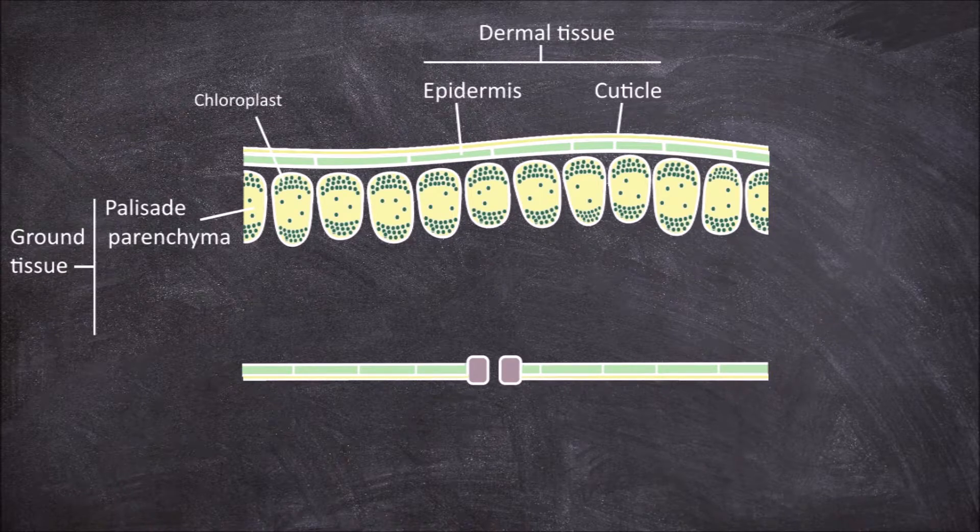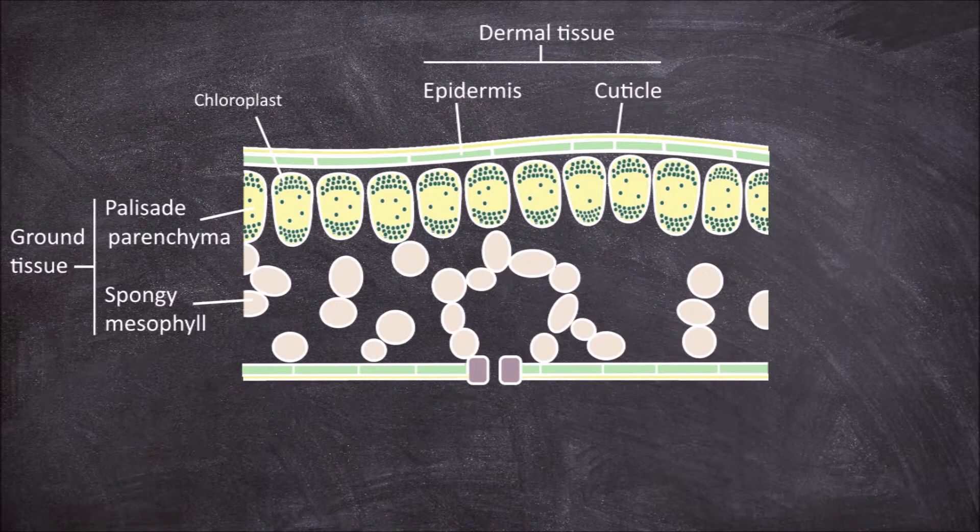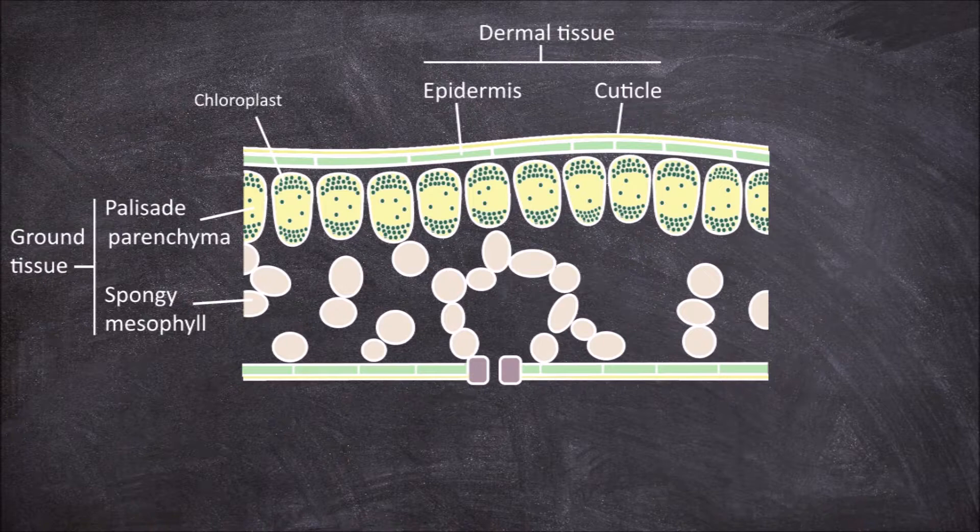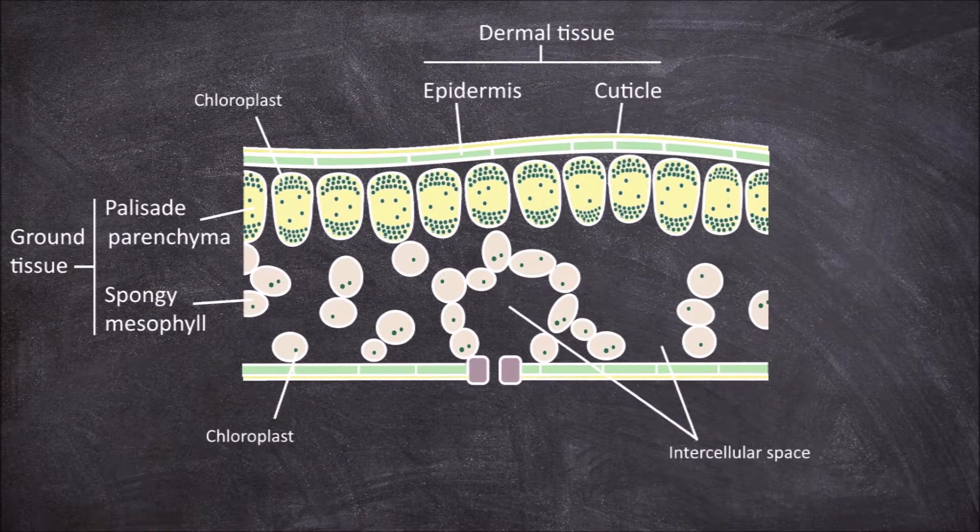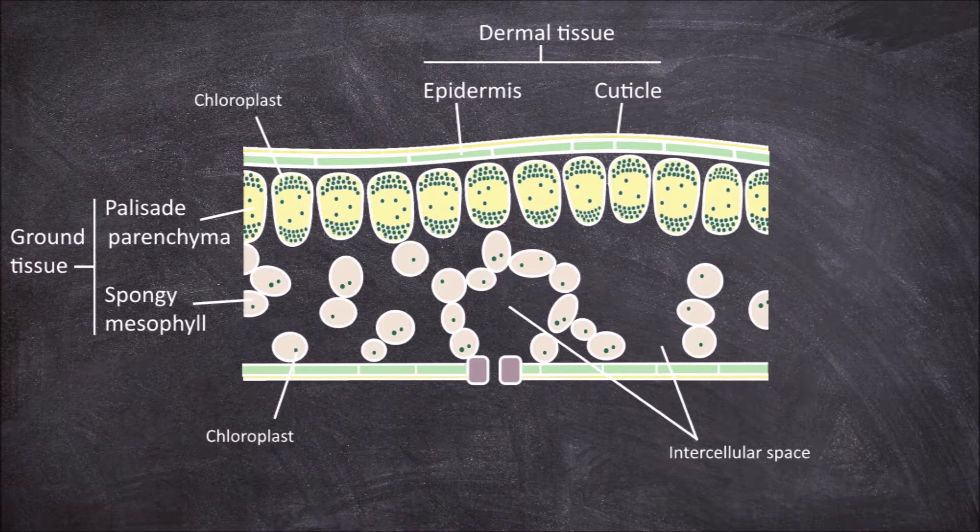The second layer of ground tissue is the spongy mesophyll. These cells are less uniform in shape; they do contain some chloroplasts but not as many as the palisade cells. The cells in this layer are loosely arranged and have lots of intercellular space around them. The intercellular space is filled with water and oxygen which allows for gas exchange to occur between the cells and the air coming in from the stomata and oxygen leaving the leaf.